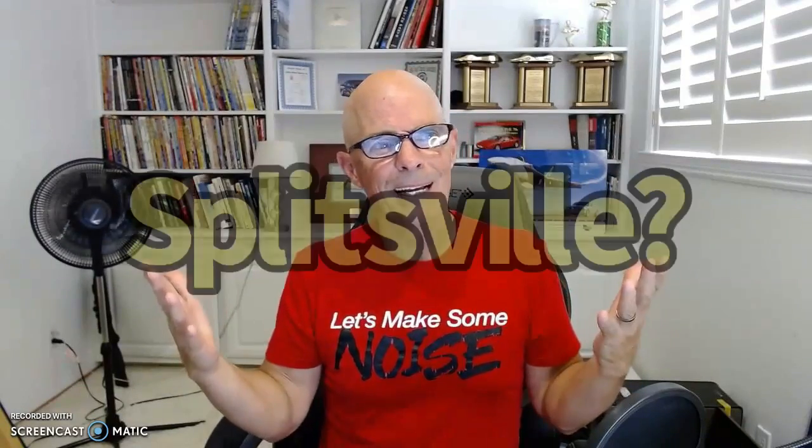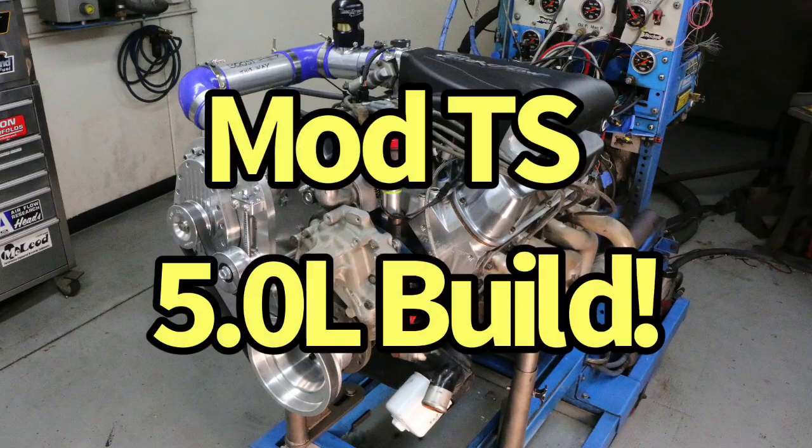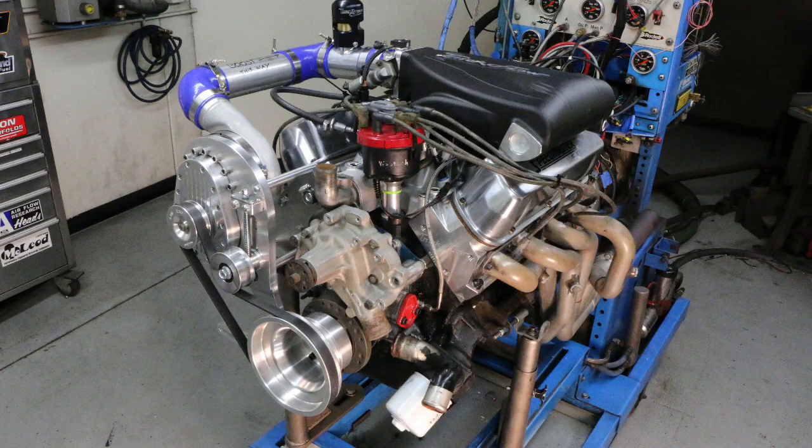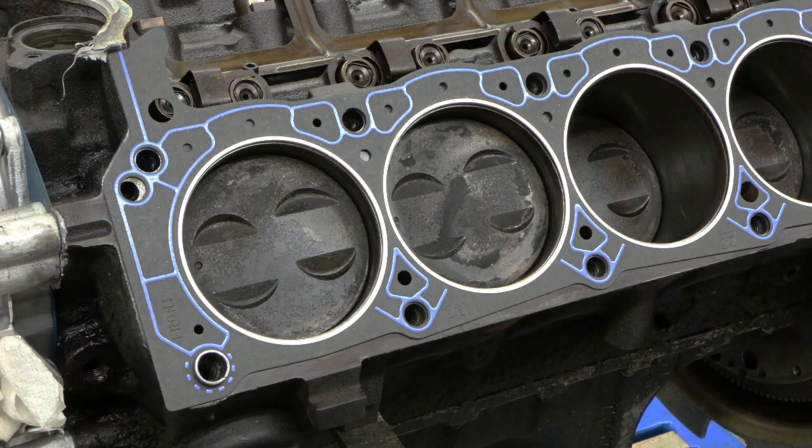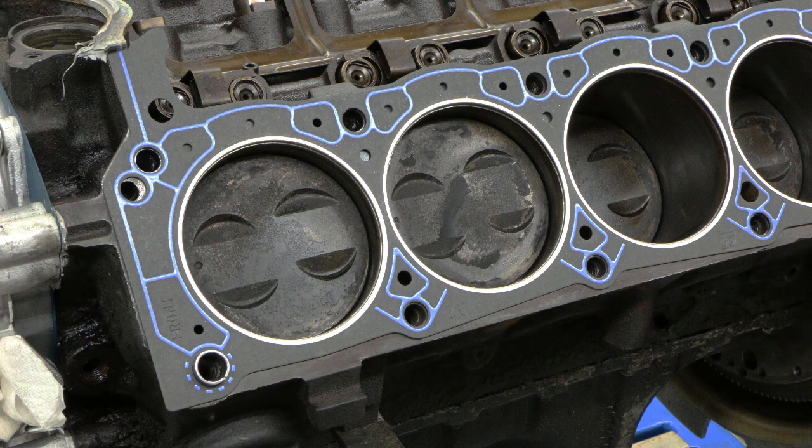But Richard, what about splitting the block? Honestly, I don't think we have to worry about that. To illustrate that the five liter Ford obviously will take a lot more power than what we think. We're dealing specifically with the block strength here. We're taking a look at stock bottom end stuff with ring gap.